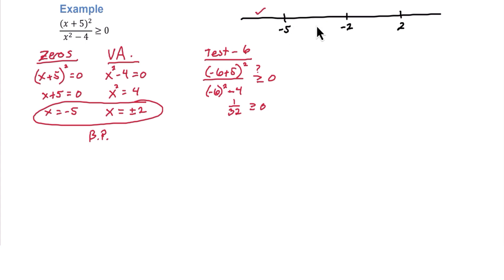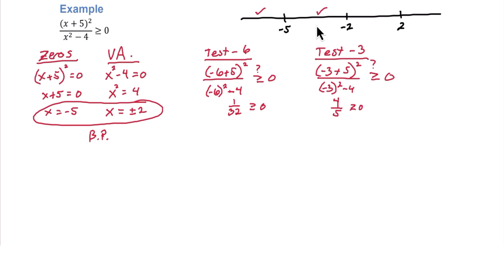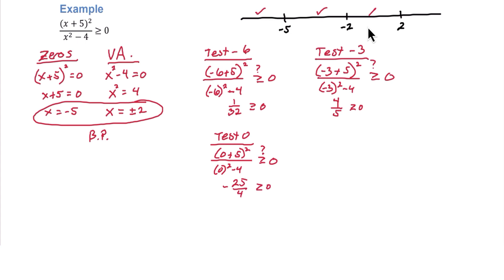Up next, we need to pick a number between negative 5 and negative 2. I'm going to choose negative 3. Again, we'll plug that value into the inequality. And again, we're asking, is that greater than or equal to zero? This time we get 4 fifths is greater than or equal to zero, which is true. In the third interval, between negative 2 and positive 2, we can pick zero and plug it in. 0 plus 5 squared divided by 0 squared minus 4. We get negative 25 fourths, which is not greater than or equal to zero. So that third interval is no good.